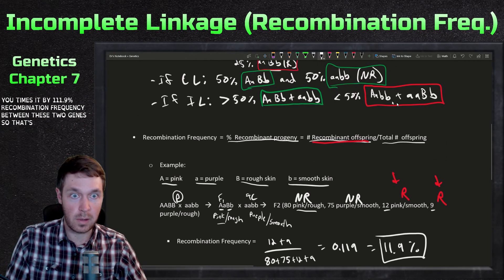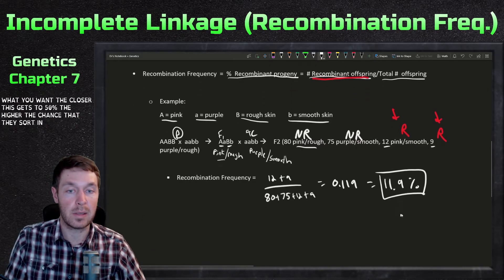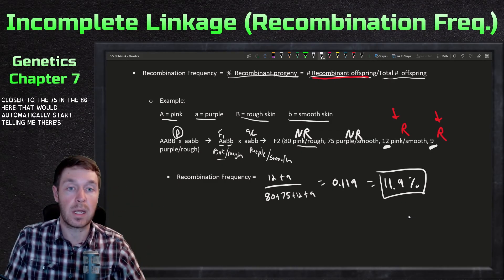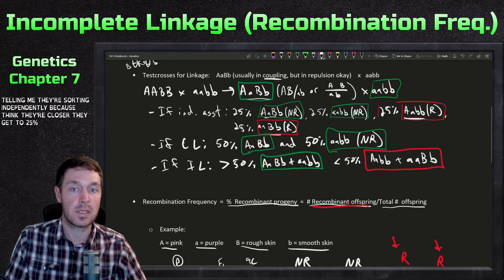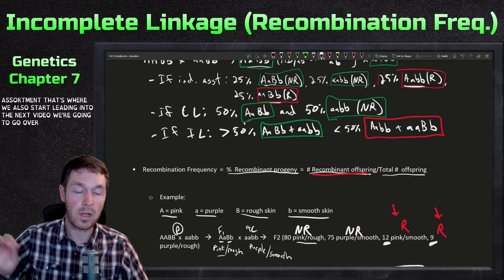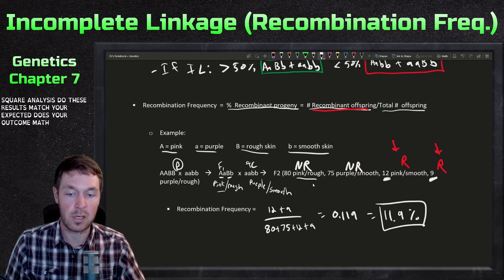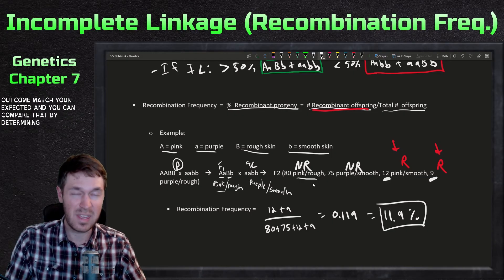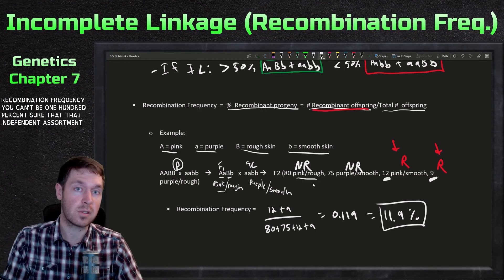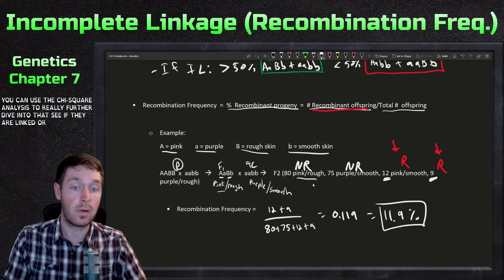At 11.9 percent, these genes are less than 50 percent — they are linked. The closer the recombination frequency gets to 50 percent, the more likely the genes assort independently. If numbers were closer to 25 percent each, that signals independent assortment. This leads into the next video on chi-square analysis, where you test whether results match expected values to determine if genes are truly linked or independently assorting.